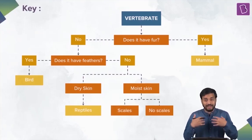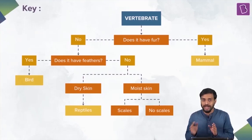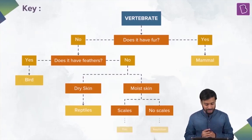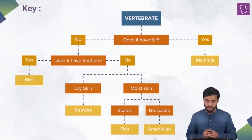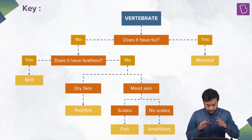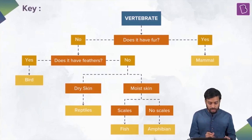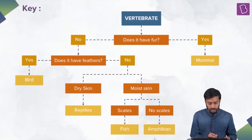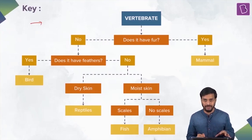We have to next ask: do they have scales or do they not have scales? If they have scales, they are called the fishes. And if they don't have scales, they are the amphibians. See how simplistic this method of a key is — just on the basis of some questions, you can identify and categorize organisms. This is the key.